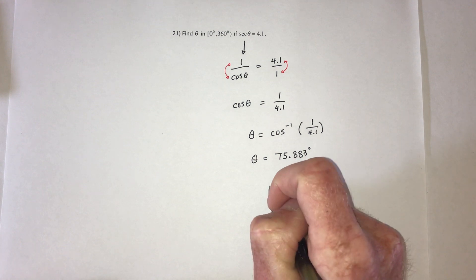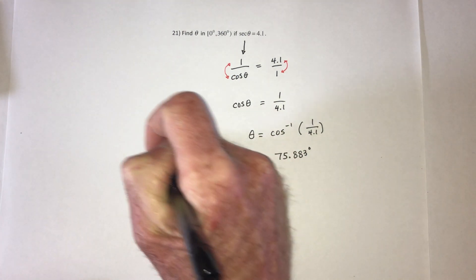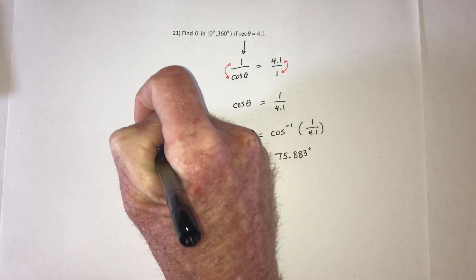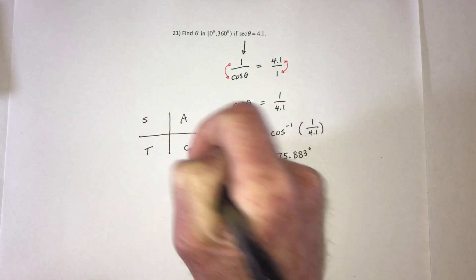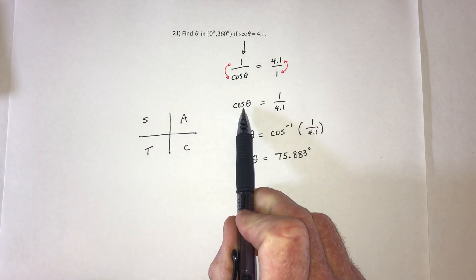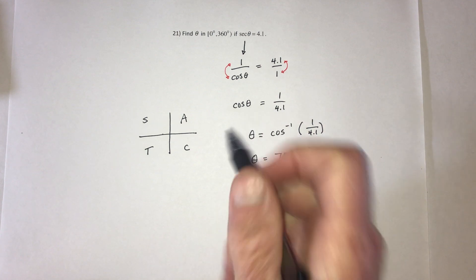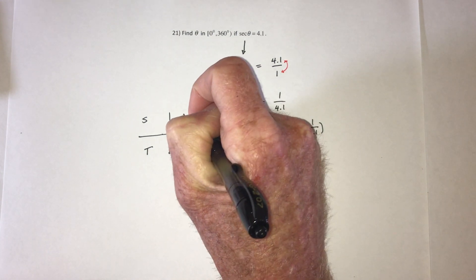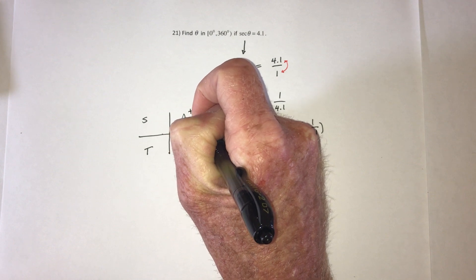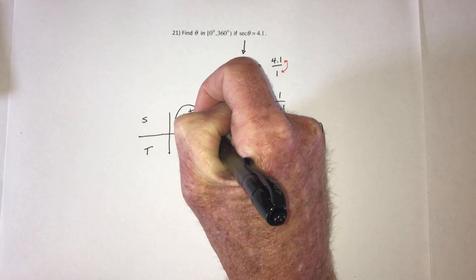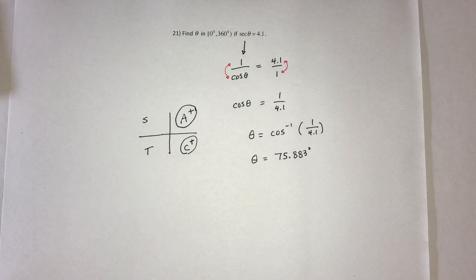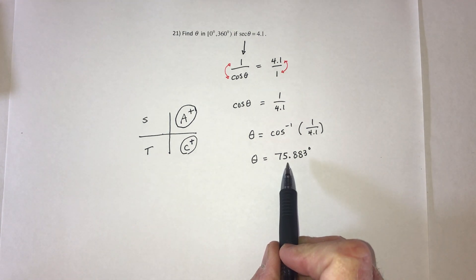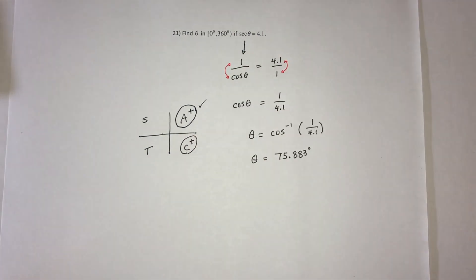Now, what about the other answer? A smart trig class. This line right here says cosine equals a positive. So that happens right here in the fourth quadrant, and it happens right here. Oops. I meant to circle it in the fourth quadrant, so this part is already done.